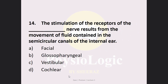MCQ number 15: The stimulation of the receptors of the blank nerve results from the movement of a fluid contained in the semicircular canal of the internal ear. Option A: facial, Option B: glossopharyngeal, Option C: vestibular, Option D: cochlear. The correct answer is Option C — vestibular.